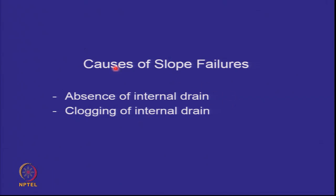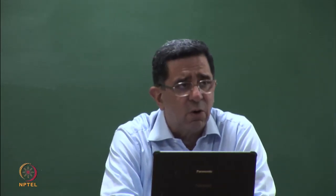What are the causes of failure? What we have normally seen are two causes: absence of an internal drain and clogging of an internal drain. Why should an internal drain be absent? If you look back at the tailings ponds or ash ponds constructed 10, 15, 20 years ago, at that time one had not anticipated such immense pressure that land would be unavailable.